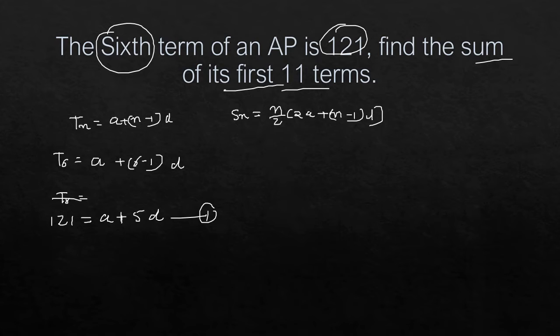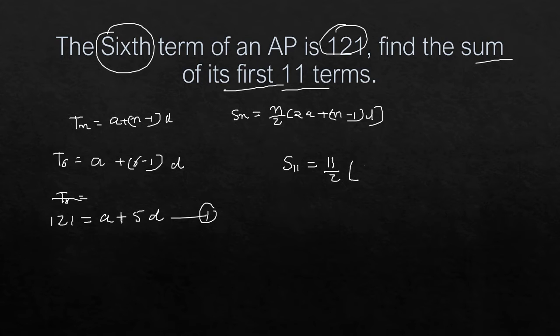For the first 11 terms: S_11 = 11/2 × [2a + (11−1)d] = 11/2 × [2a + 10d]. From 2a + 10d, we take 2 as common, giving 11/2 × 2 × [a + 5d]. The 2 cancels, leaving S_11 = 11 × (a + 5d).